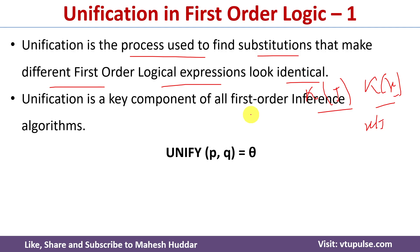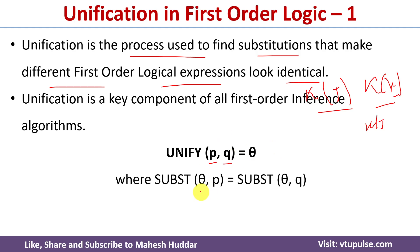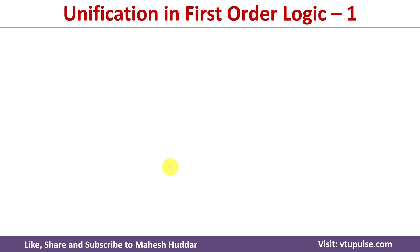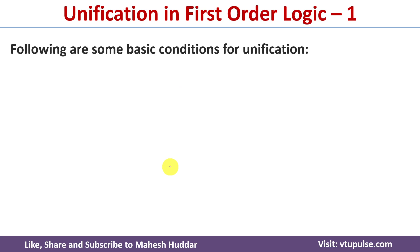Let's assume that p and q are two different first-order logic expressions, and theta is a substitution. Whenever we substitute theta into p and theta into q, p and q will look exactly identical. That is the reason theta is called the unifier value. Now we will understand what are the different conditions to perform unification.